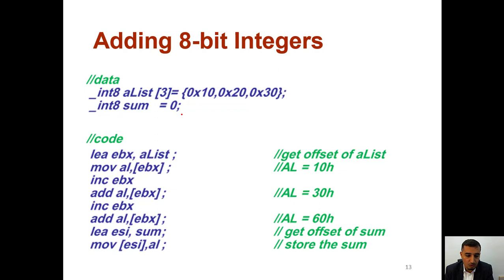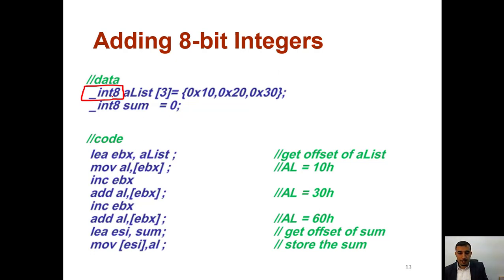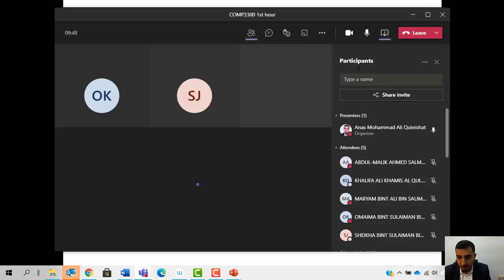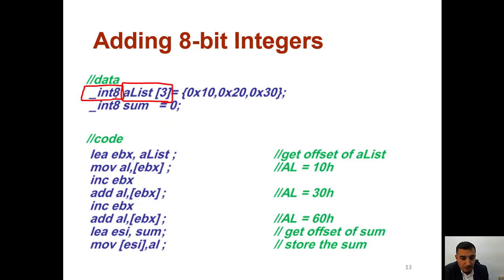We stopped on how to add 8-bit integers. When we deal with 8-bit integers, always keep in mind that the data is defined as __int8. When you define __int8, this means your data is 8 bits. If we have an array called 'a list' defined as type __int8, the data will be stored in sequential memory locations.